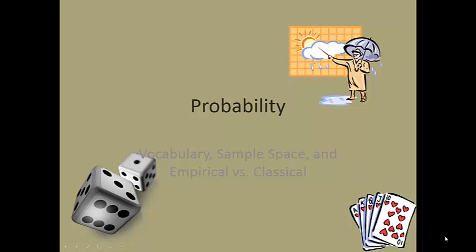This is the first in a series of videos on probability. In this video we're going to start with some vocabulary and then we're going to talk about listing the possible outcomes in a probability experiment.